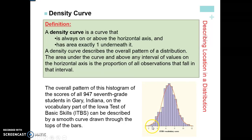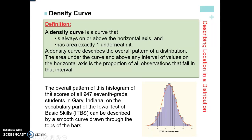For example, what is the percentage of people that have a vocabulary score between two and four? This graph gives us the overall pattern of the histogram of scores of 947 seventh-grade students in Gary, Indiana on the vocabulary portion of the Iowa test. It's described by a smooth curve drawn on top of your histogram bars.